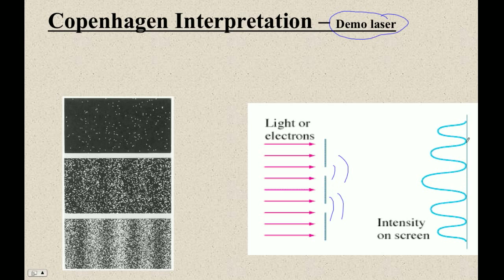You get bright spot, dark spot, bright spot, dark spot. This is an interference pattern. This is a wave phenomenon.